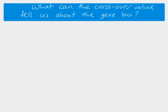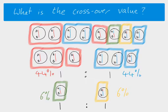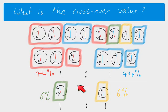The crossover value is the number you get by adding the two recombinant class percentages together. These will always be the same — they're in a one-to-one ratio — so the crossover value in this example is 12%.